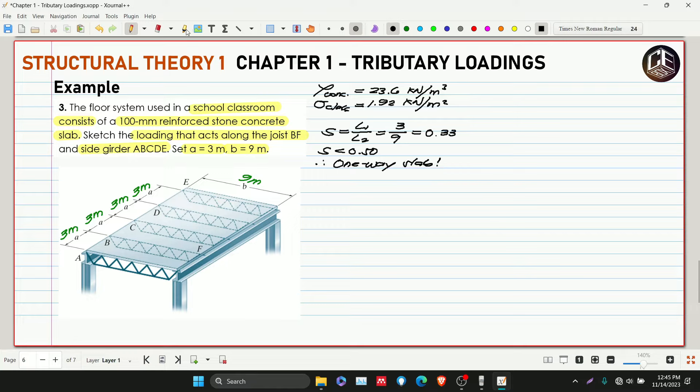Now, if it's one-way slab, the distribution will be like this. The slab will distribute along the longitudinal axis.